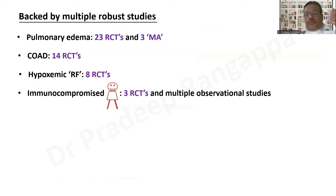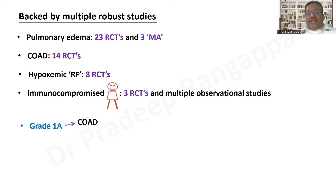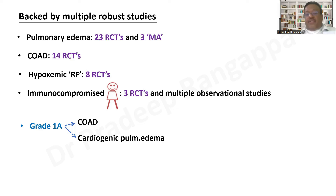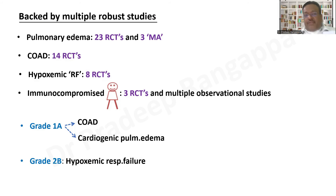NIV is backed by multiple robust studies: for pulmonary edema, 23 randomized controlled trials and 3 meta-analyses prove its impact on outcomes; for COPD, 14 RCTs; for hypoxic respiratory failure, 8 high-quality RCTs; and for immunocompromised patients, 3 RCTs plus multiple observational studies. There is a Grade 1A recommendation — strong recommendation with good scientific evidence — for NIV in COPD and cardiogenic pulmonary edema. HFNO does not appear in Grade 1A, only Grade 2B in hypoxic respiratory failure.